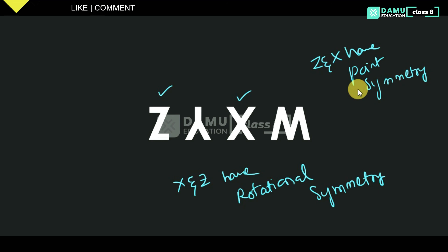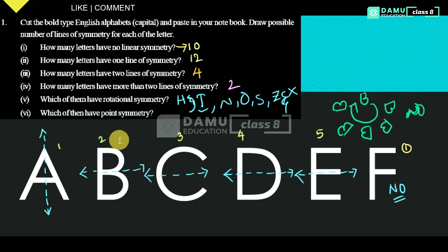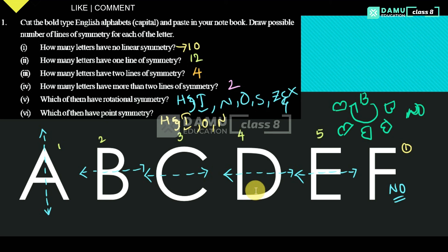So which letters will have point symmetry? That is: H, I, N, O, S, X, and Z — these letters have point symmetry. Thanks for watching, please subscribe.